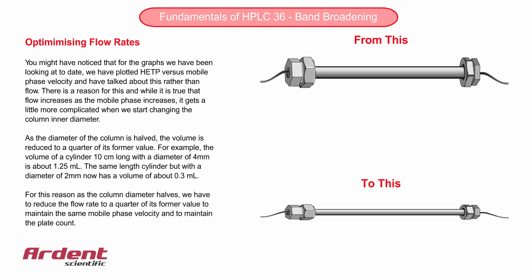As the diameter of the column is halved, the volume is reduced to a quarter of its former value. For example, the volume of a cylinder 10 centimetres long with an internal diameter of 4 millimetres is about 1.25 mils. The same length cylinder, but with a diameter of 2 millimetres, has a volume of about 0.3 mils.